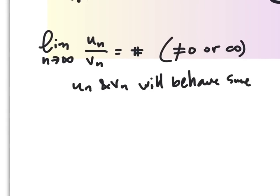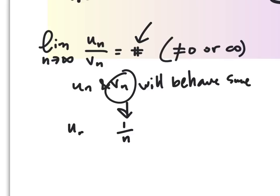The key is choosing v sub n. If you compare something to 1 over n and you get a finite number, you know that u sub n will diverge just like 1 over n does — the harmonic series.